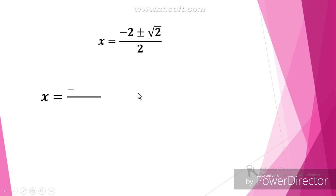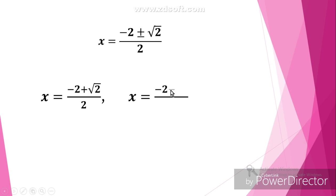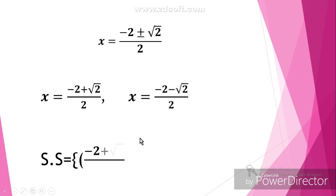Now we have a plus or minus sign, so we write it once with plus and once with minus, giving us two values of x. The solution set is equal to the first value of x and the second value of x.